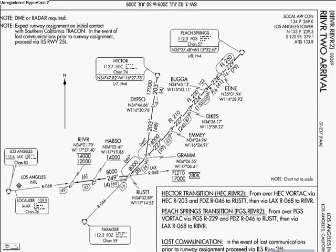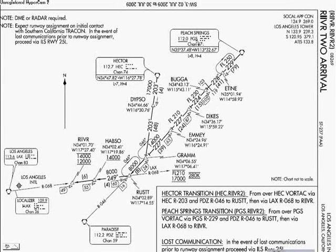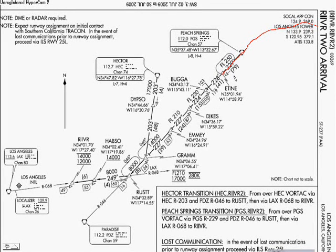Here's the River 2 Arrival, which was from our longer distance flight to Los Angeles from St. Louis. We were using PGS, which is Peach Springs. This one is very simple. You're coming over from St. Louis and you join Peach Springs, then heading 229 degrees for 79 miles — they can go for a long time — to the Eaton intersection.